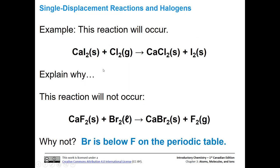This particular reaction will occur: we have calcium iodide and chlorine gas. Chlorine is above iodine on the periodic table, so we're going to get calcium chloride and iodine solid. That's our elemental form — notice this has the characteristic single displacement reaction: compound, new compound, element, new element. Now this next reaction actually won't go. We have calcium fluoride, but we're trying to replace it with bromine. Bromine is below fluoride on the periodic table, so this reaction will not proceed.